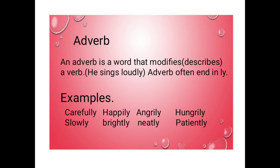Angrily — 'A fan shouted angrily at Emma.' Here 'shouted' is the verb and 'angrily' is the adverb. Hungrily — 'The dog eats the meat hungrily.' Here 'eats' is the verb and 'hungrily' is the adverb. Slowly — 'The turtle walks slowly.' Here 'walks' is the verb and 'slowly' tells us how it walks.